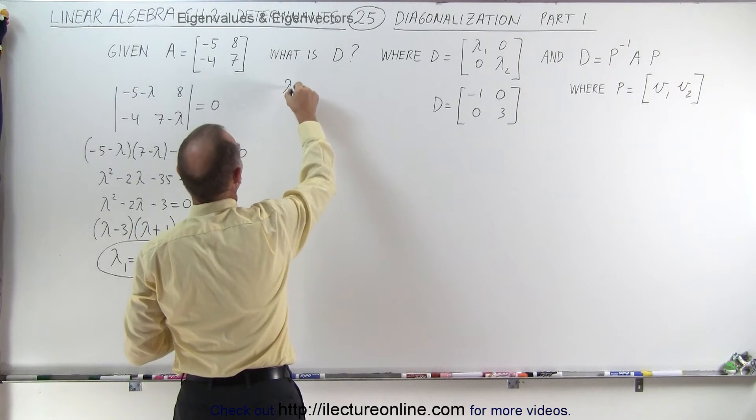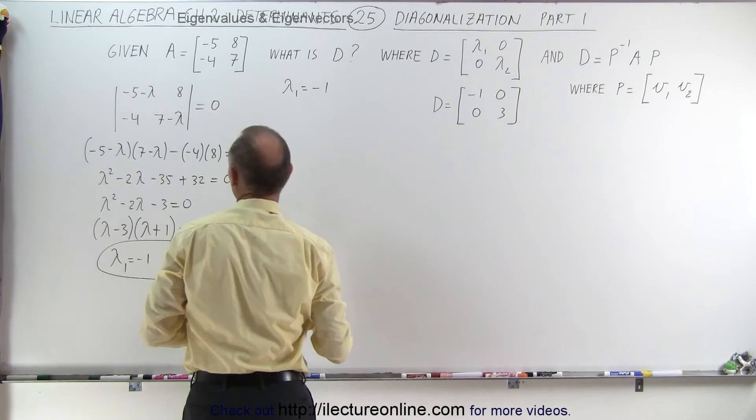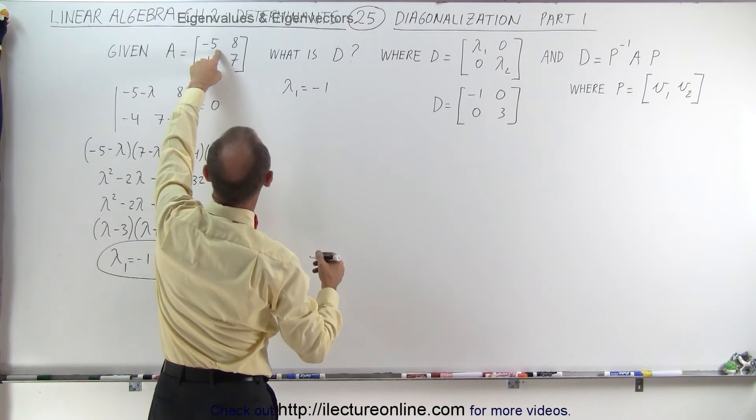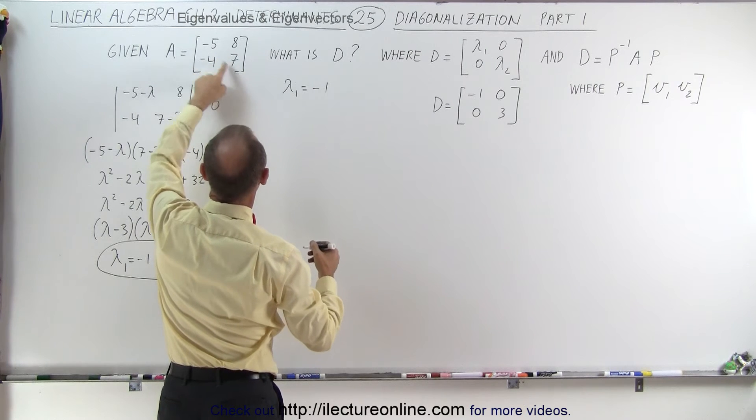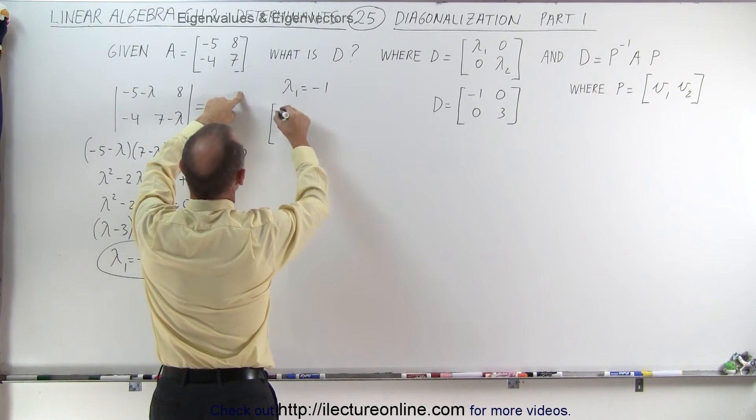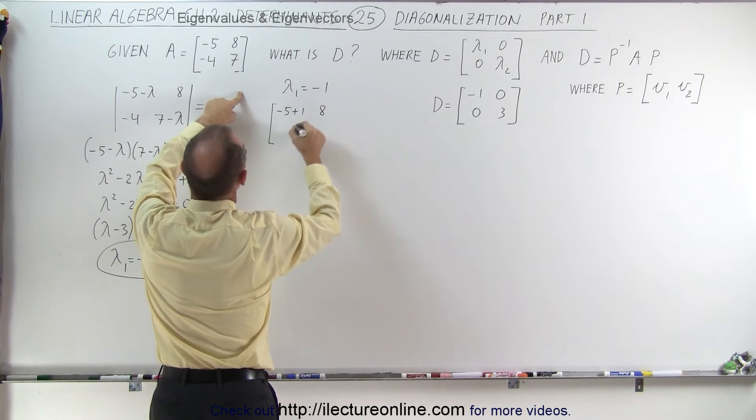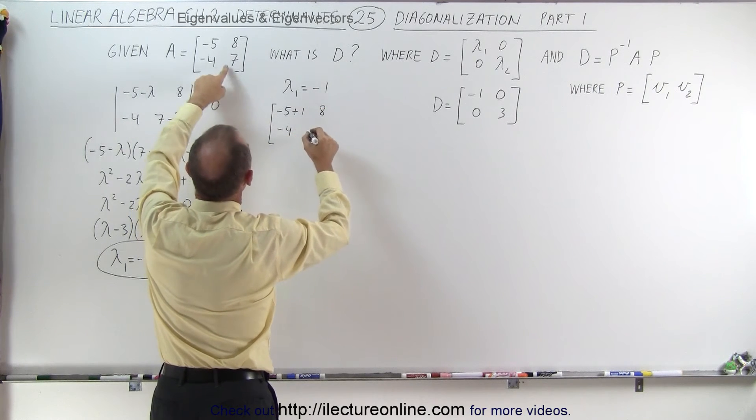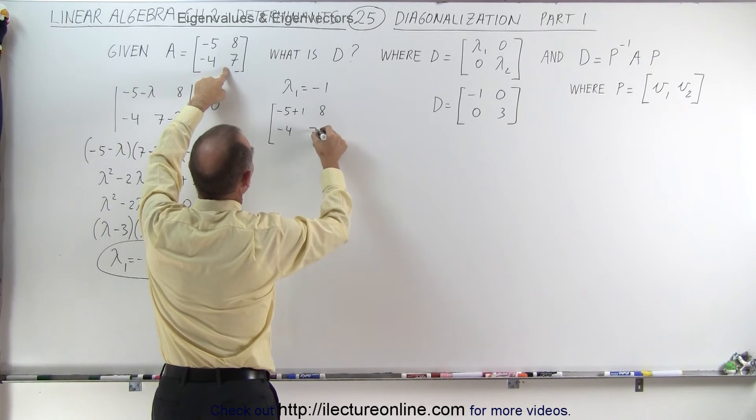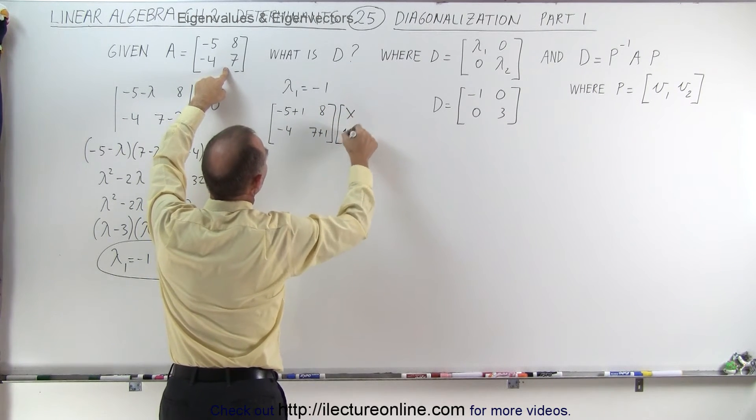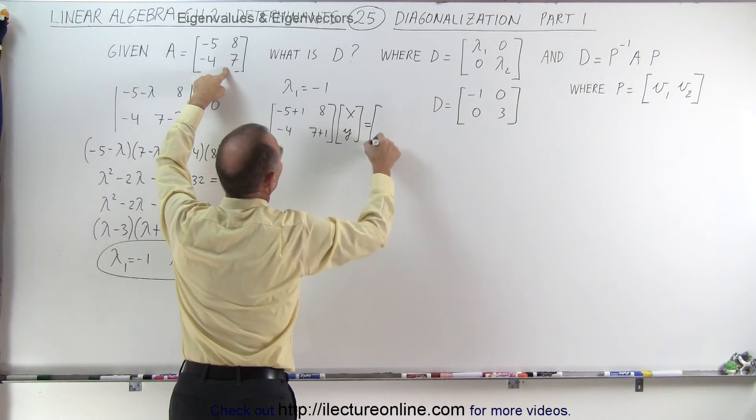So starting with lambda 1 equals negative 1. To find the eigenvector, we're going to subtract the negative 1 from the diagonal elements. Minus 5 minus a minus 1, which is plus 1. 8, minus 4. 7 minus a minus 1, which is 7 plus 1. Multiply times x and y. And we get the 0 matrix.